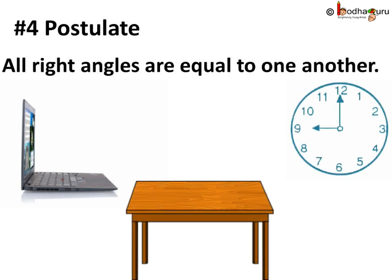All right angles are equal to one another. This is another postulate given by Euclid. This means the angle between two lines which are perpendicular to each other is always same, i.e. it is equal to 90 degrees, i.e. a right angle. So that was about a few postulates given by Euclid.